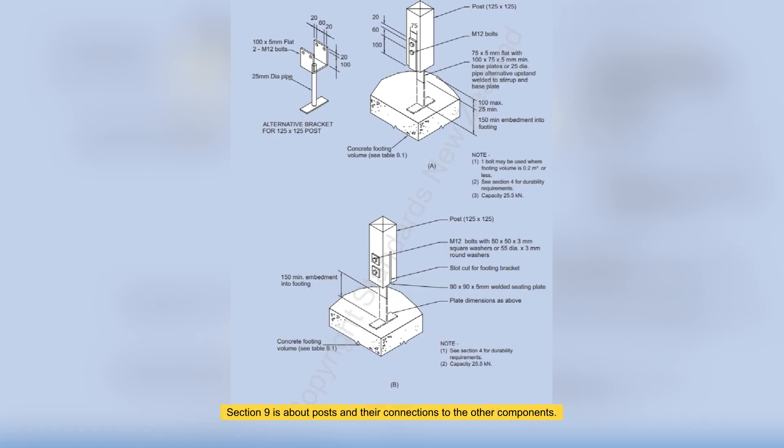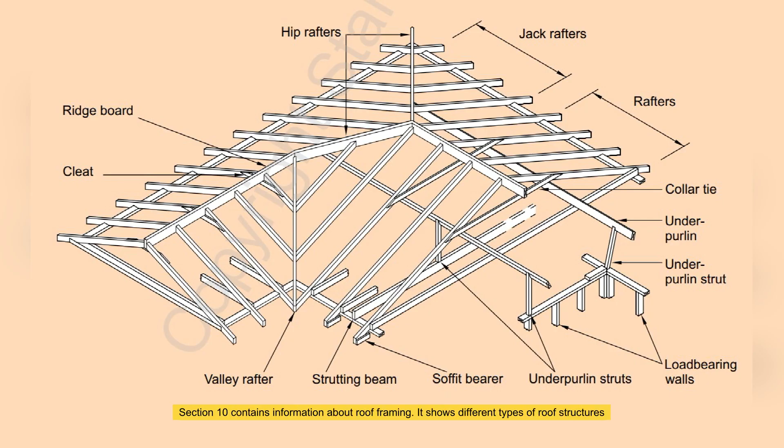Section 9 is about posts and their connections to other components. Section 10 contains information about roof framing. It shows different types of roof structures covered by this standard and how to choose the size and fixing for the components.